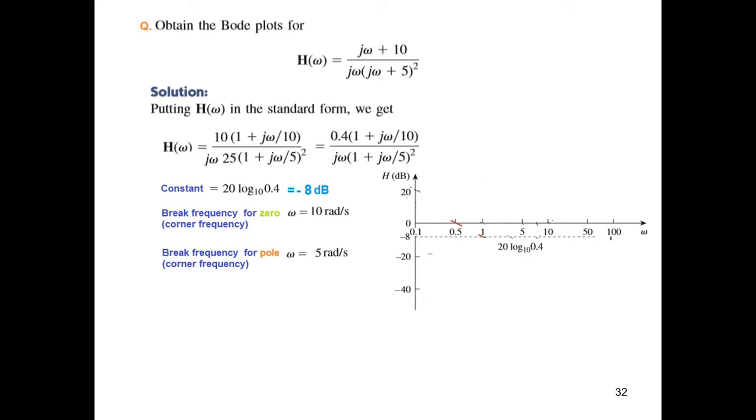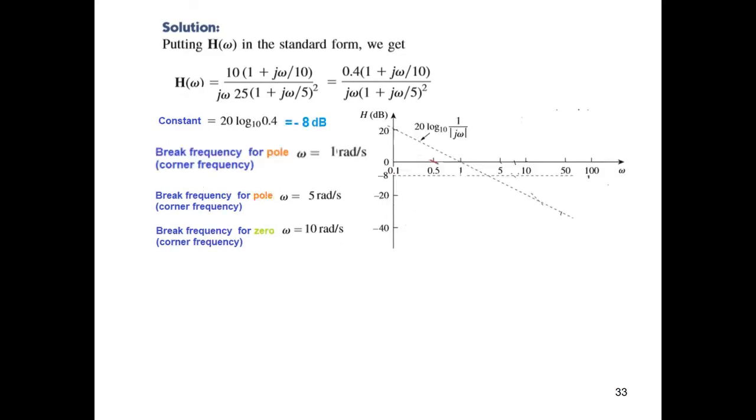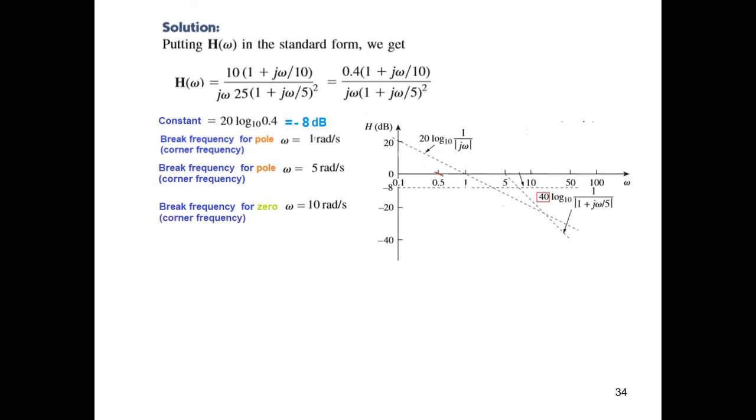So first of all we plot the constant at minus 8 dB, and then we plot the pole at 1 radian, that is jω only. Its corner frequency is 1, and the slope is 20 dB down. So minus 20 dB per decade. So this is the slope for the pole.